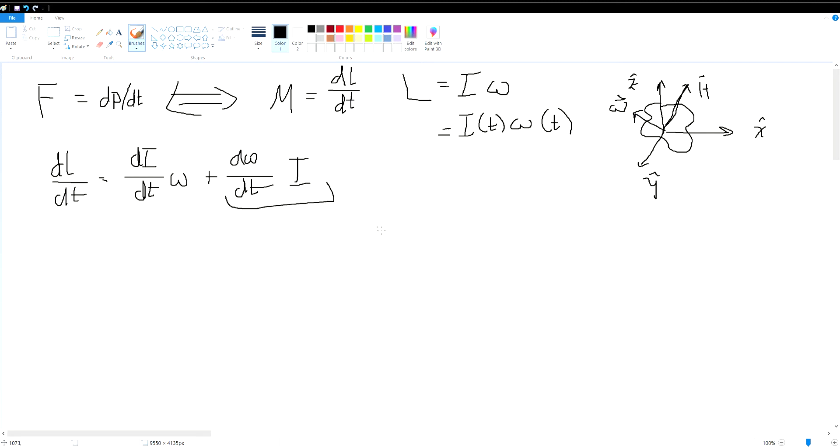So we end up finding that dL/dt is equal to dI/dt omega plus d omega/dt I. Now this part right here, we're fine with that. We can just step away from that. However, with the moment of inertia, we have to take into account that this will be changing. We can't just assume that it is going to be a constant change over time.